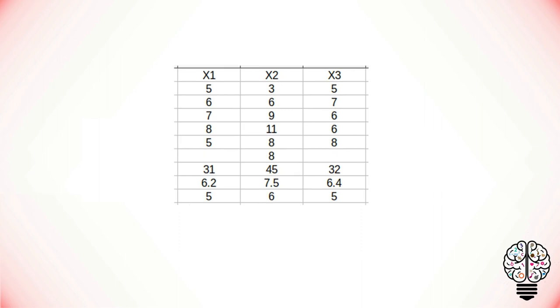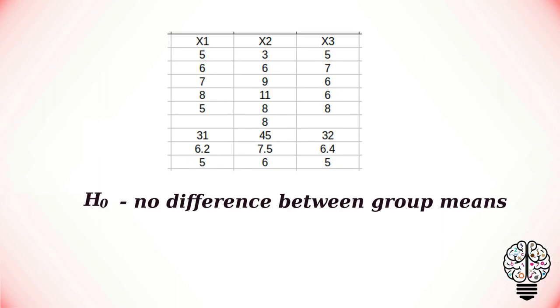Our null hypothesis is that there is no difference between group means, and our alternative hypothesis states that there is difference between group means.